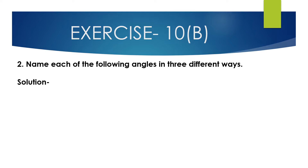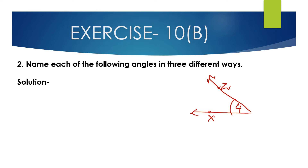Now we will solve question number 2: name each of the following angles in 3 different ways. First we draw these figures. The figure is given with points Z, X, Y, and angle 4.